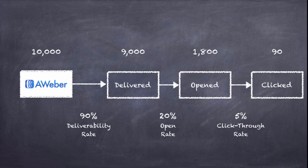Once they open the email, how do you get them to click the link and go where you want them to go? The click-through rate can be dramatically increased by having proper copywriting — your message must be attractive enough. There must be continuity: the content of the email must be interesting enough to lead them to want to know more by clicking the link. So those are the key components: deliverability, open rate, and click-through rate.